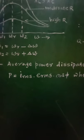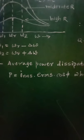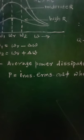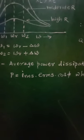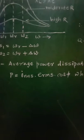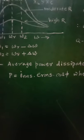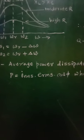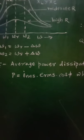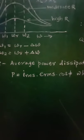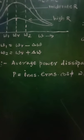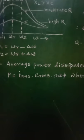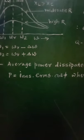The choke coil consists of thick laminated copper wire wound closely in a large number of turns over a soft iron laminated core. It offers a large inductive reactance XL = ωL to the AC, thereby reducing the current. The laminated core reduces eddy current loss.